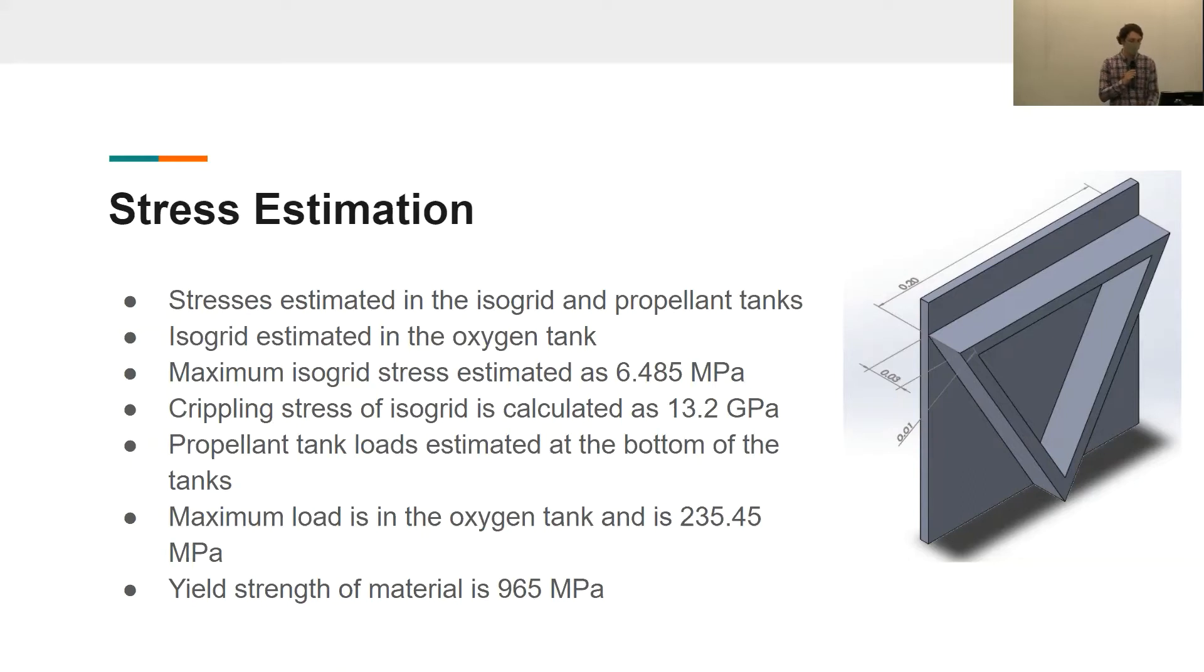If you look at the isogrid section in the diagram, it is made up of three beam elements. The top beam element is actually the one that is estimated to undergo the highest stress because it is taking loading from the structure and from the pressure of the oxygen fuel tank. This stress is estimated to be 6.485 megapascals, and that is compared to the critical crippling stress of the isogrid, which is calculated to be 13.2 gigapascals. So it is well below the limit.